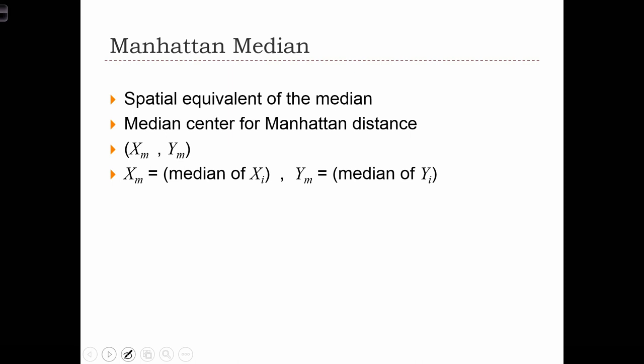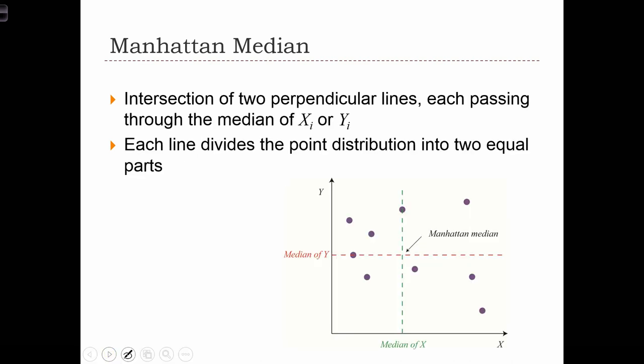The Manhattan median is simply made up of the median of the x-coordinates and the median of the y-coordinates. And the location of the median is where those two median coordinates of x and y intersect.